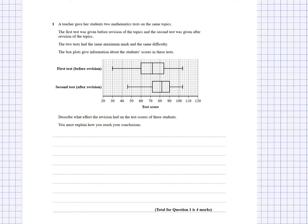Here's our first question. I'm going to start reading the question and then talk about how you might think about answering it. A teacher gave her students two mathematics tests on the same topics. The first test was given before revision and the second test after revision. The two tests had the same maximum mark and the same difficulty. The box plots give information about the students' scores in these tests - first test before revision and second test after revision. Describe what effect the revision had on the test scores of these students.